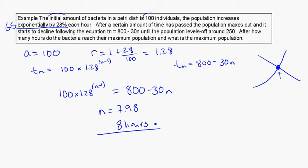So the next part of the question is, what was the maximum population? So here, now that we know that n is going to be equal to 8, we can use our tn formula, because we know a and r, and figure out what that is. So tn, sorry, it's t8, because we're looking at the 8th hour, is equal to 100 times 1.28 to the power of 8 minus 1.